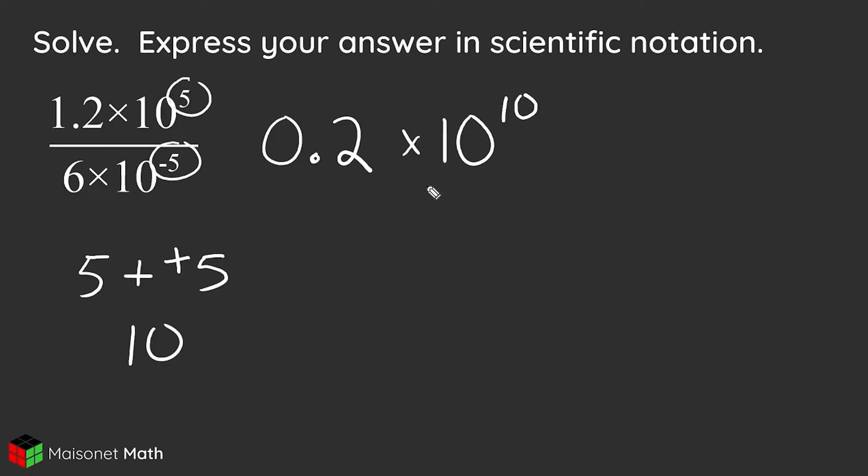Now, our answer is not quite in scientific notation. We cannot have a 0 in the ones place here. We have to have a digit, a 1 through a 9. So to accomplish this, we're just going to take our decimal point right here and move it 1 power of 10 to the right.